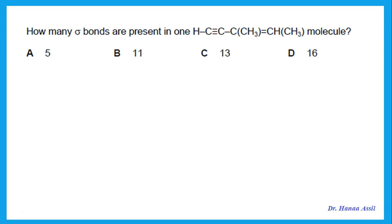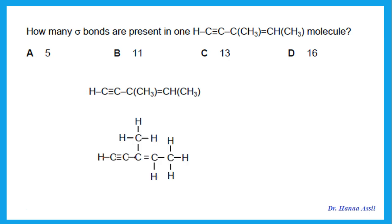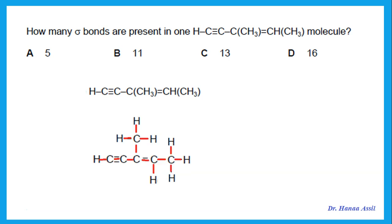How many sigma bonds are present in this molecule? Again, draw out the molecule. Any single bond is sigma, and any double or triple bond has one sigma. The total sigma bonds here are 15.